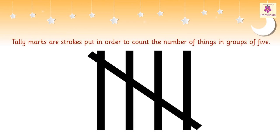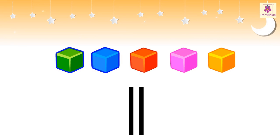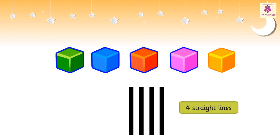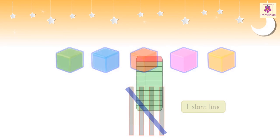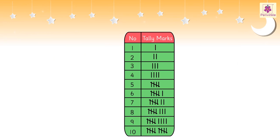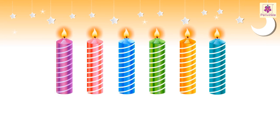Tally marks are strokes put in order to count the number of things in groups of five. We draw one straight line for the first four objects; the fifth object is represented by a slant line across the previous four lines. For numbers from one to ten, the tally marks are represented as given here.